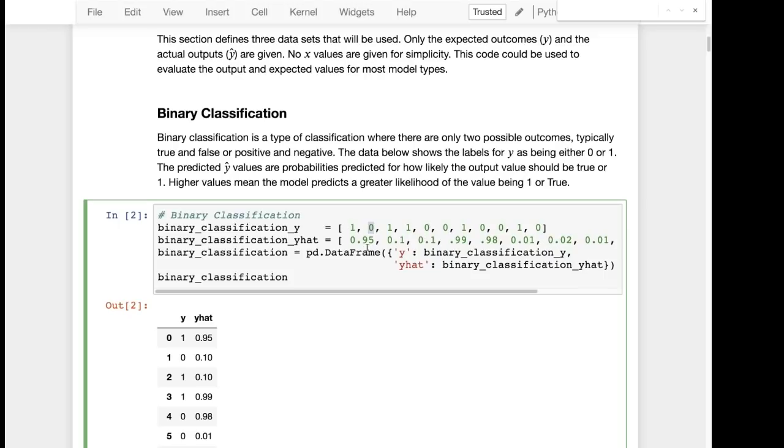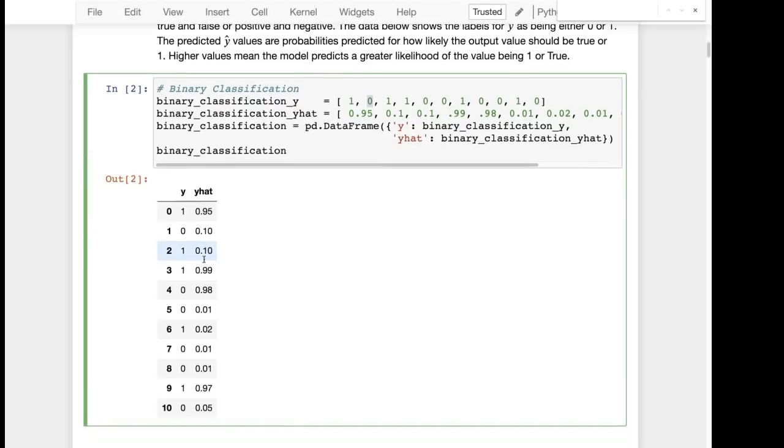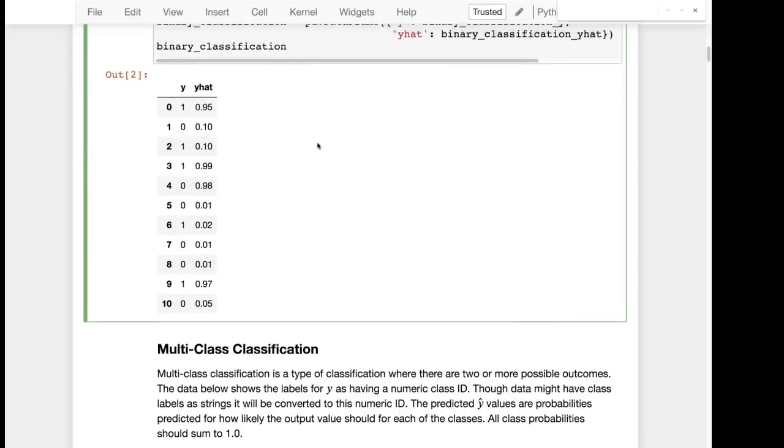So the expected is the y. The values from the actual model are the y-hat. And here's a nice listing of all of them. That's easier to look at than the python.